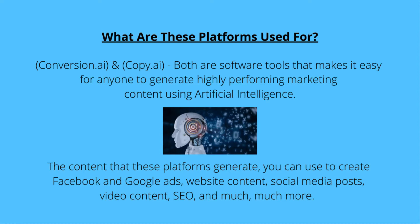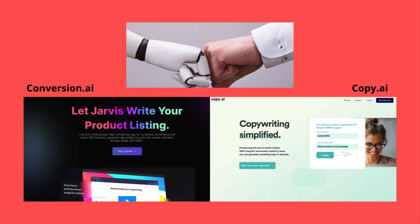You can check out the full review I did on the Conversion AI software by clicking the link in the description area below this video. In that review, I do a demonstration on how you can use the Conversion AI software to create content for an affiliate offer. Now let's go into the members area of each platform so you can see the differences in layout and how to navigate them.